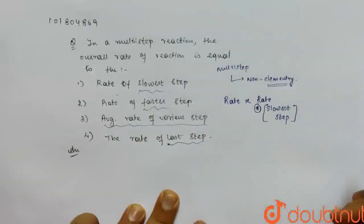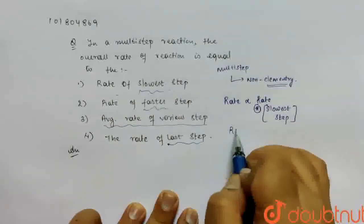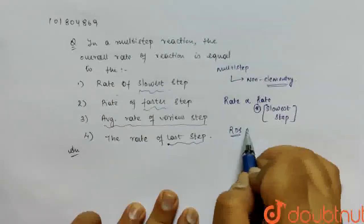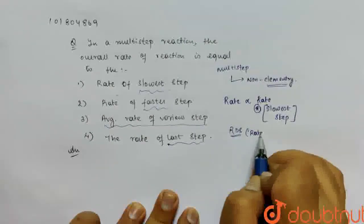This slowest step is called RDS. RDS means rate determining step.